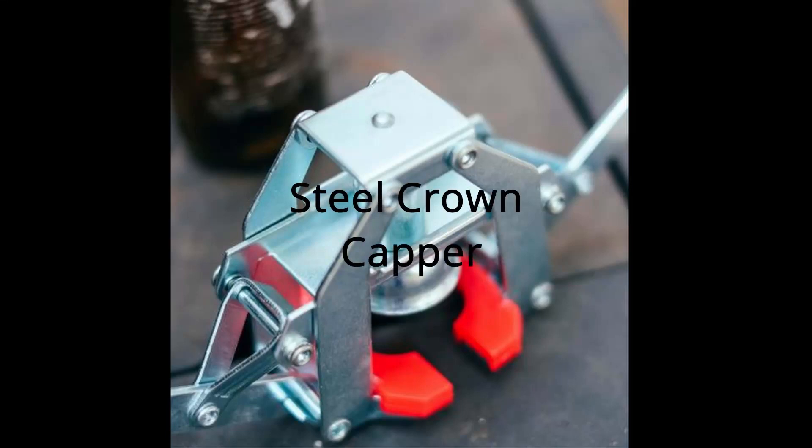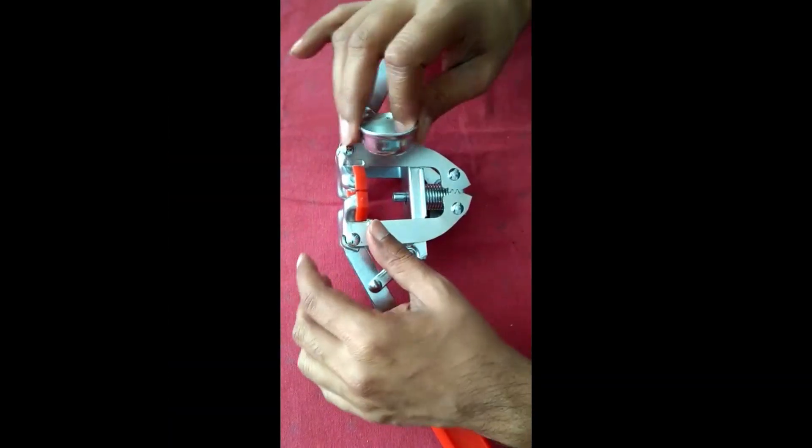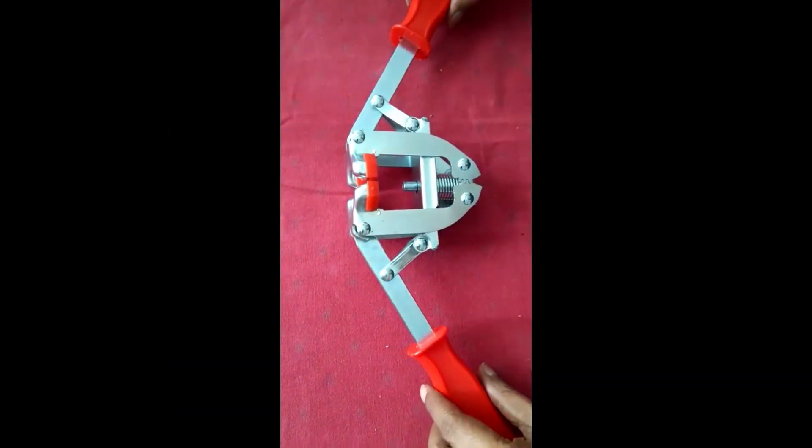The metal crown capping machine comes with a replaceable bell. The standard bell provided is 26mm, which is used for beer bottles and soda bottles.